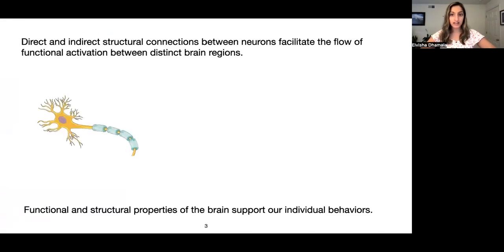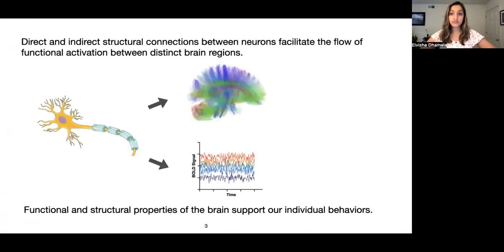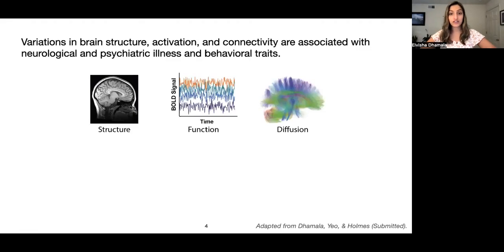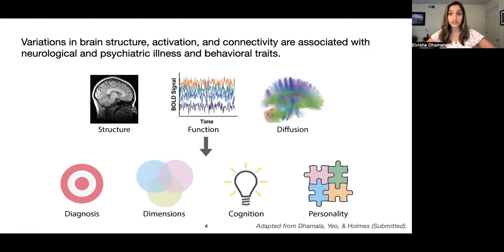White matter fibers in the brain directly and indirectly connect different brain regions, and these structural connections facilitate the flow of neural activation signals between brain regions. These structural and functional properties of the brain underlie our individual behaviors. In recent years, there have been many studies looking at how variations in brain structure, activation, and connectivity are associated with neurological and psychiatric illness and behavioral traits.